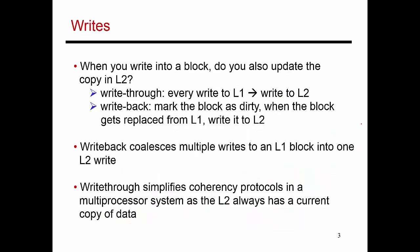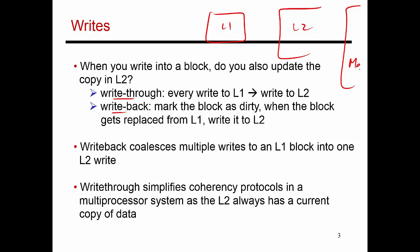Now let's look at how writes are handled. There are two main policies: write-through and write-back. Say you have an L1 cache, a backup L2 cache, and main memory. When the processor does a store and there is an L1 cache hit, you modify the contents of that block in L1. If you choose to reflect those changes in all levels of the hierarchy — L2 and memory — that's a write-through policy. Alternatively, you only change L1, and the L2 and memory copies go out of date; when the block is eventually evicted from L1, you then reflect the changes in L2 and memory — that's a write-back policy.